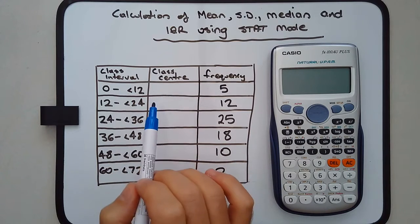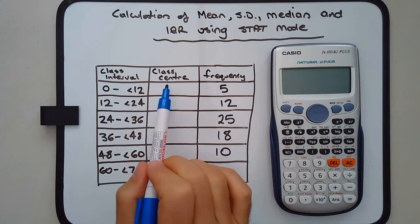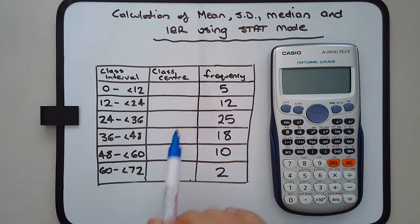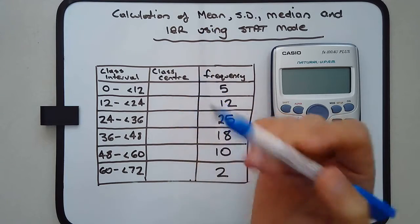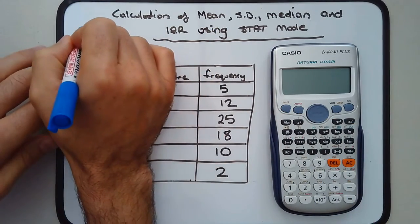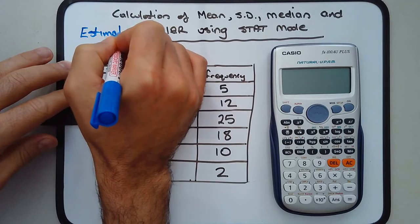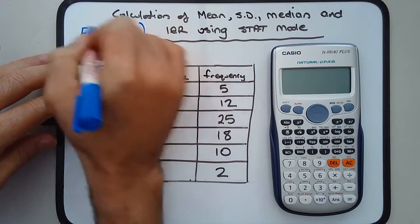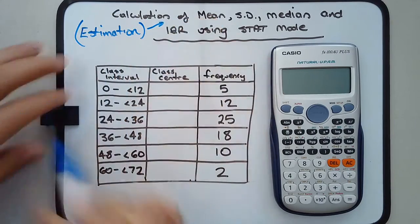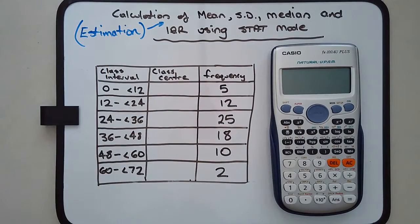First thing we need to work out, before we even bother with stat mode, is the class center. When we talk about the calculation of the mean, we really mean the estimation. So I'll clarify that - we're only estimating the mean. When you say calculation, we're actually going to be estimating it.